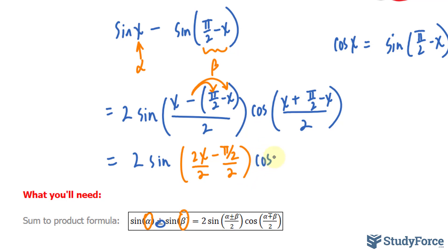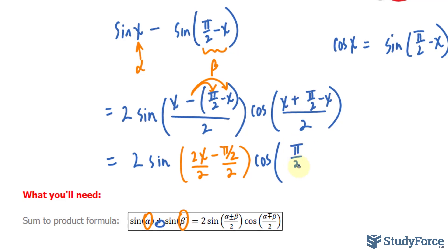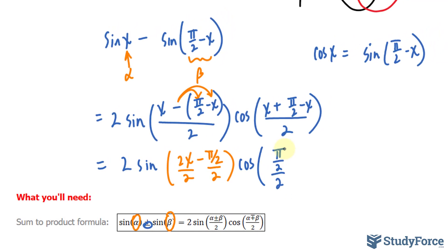And for the other trigonometric function, we have cosine, and doing the same thing as before, x minus x makes zero. We have π/2 divided by 2.